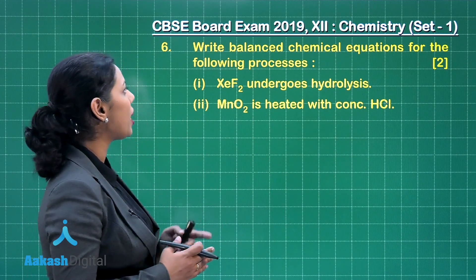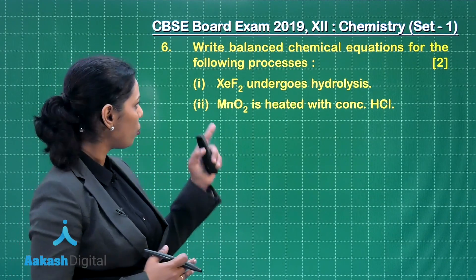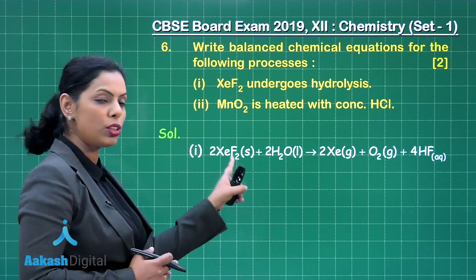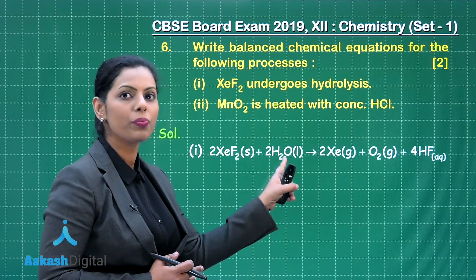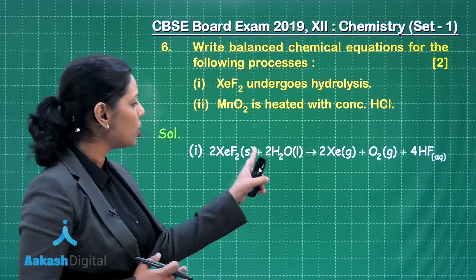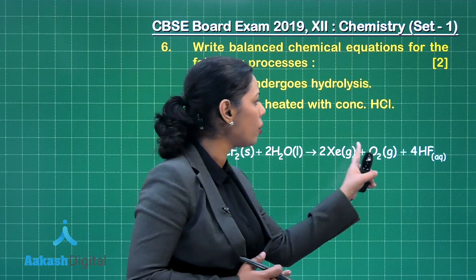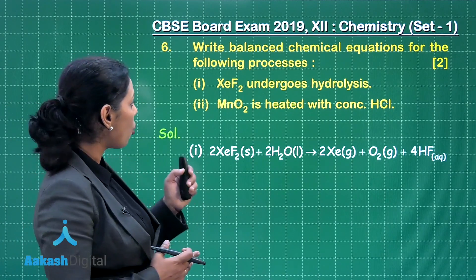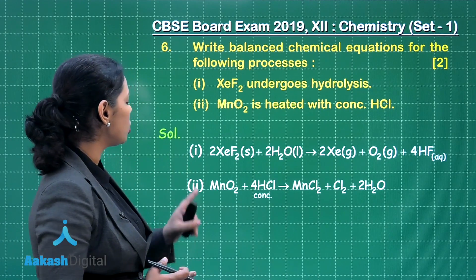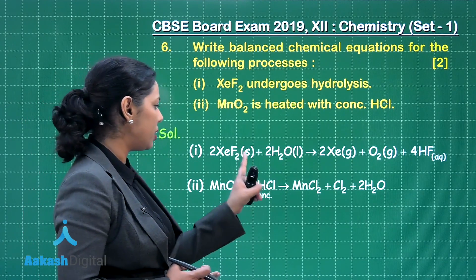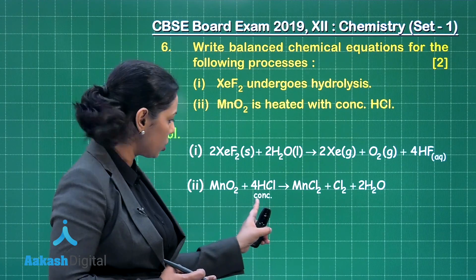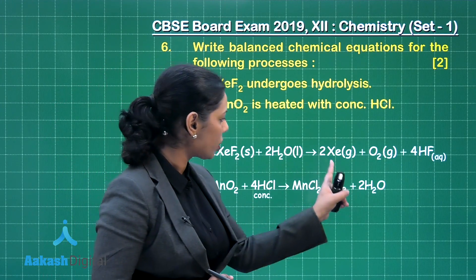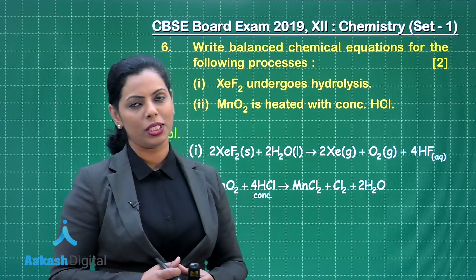You have to write the balanced chemical equation. For the first process, XeF2 reacts with H2O, undergoing hydrolysis to give xenon, oxygen, and hydrogen fluoride. For the second process, MnO2 when treated with concentrated HCl gives MnCl2, Cl2, and H2O.